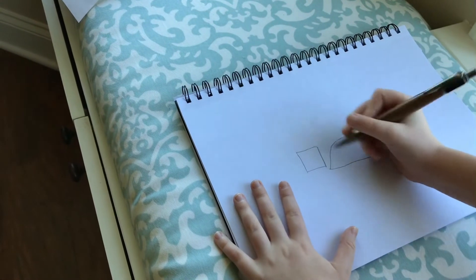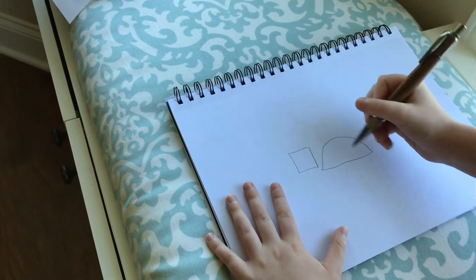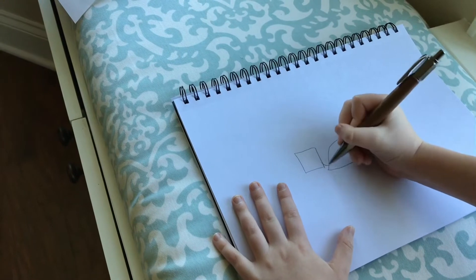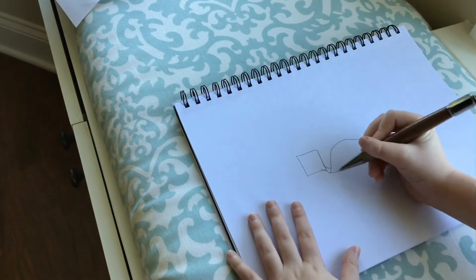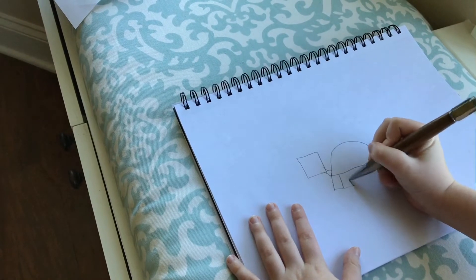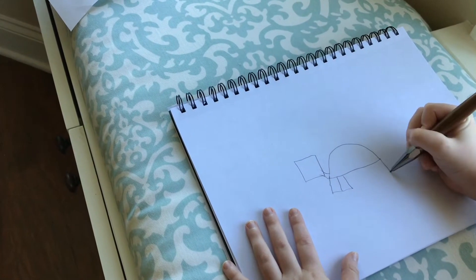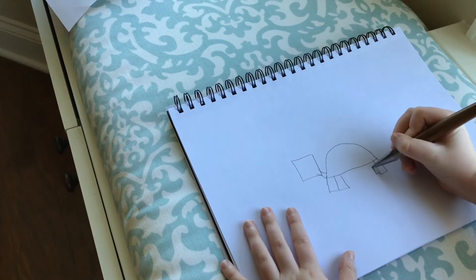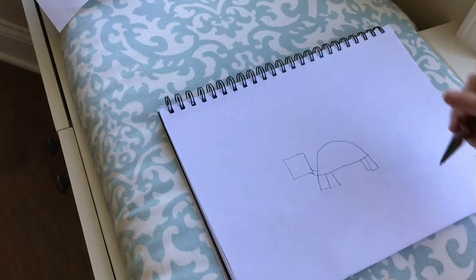So then you're gonna come over here and draw the detail since you already got the shell. So you got the neck, then you're gonna put his legs, one two one and two. So then you're done with that.